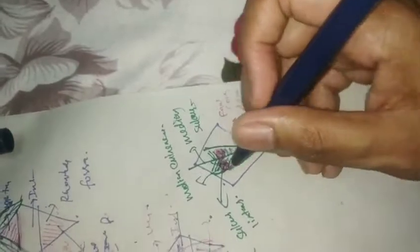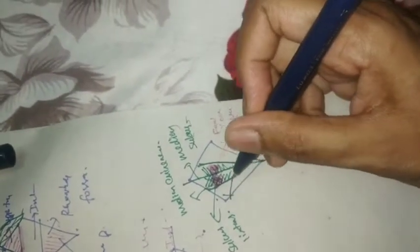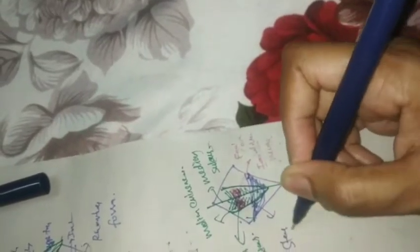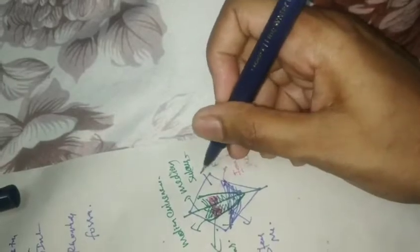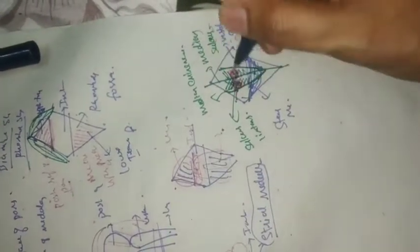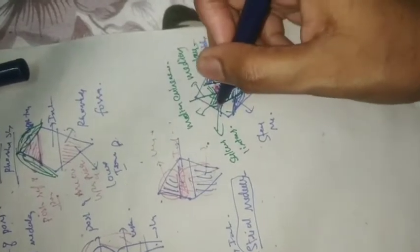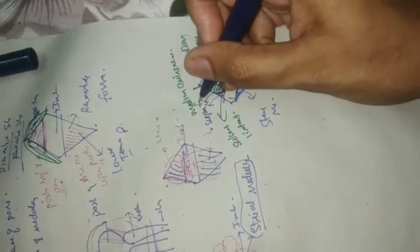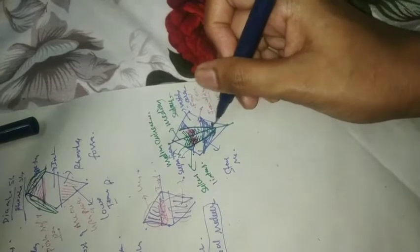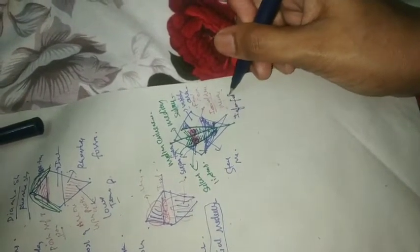You have the stria medullaris, and the area beside the sulcus limitans will be the vestibular area. This vestibular area widens into a triangular depression known as the superior fovea. Similarly, the vestibular area below will have an inferior fovea.